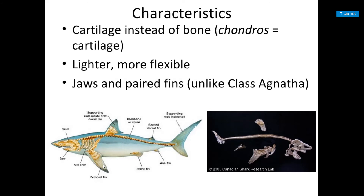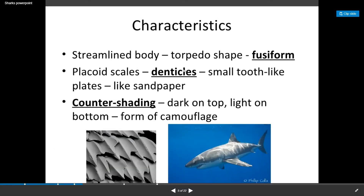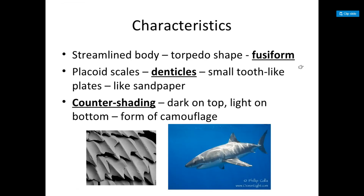Some characteristics: they have cartilage instead of bone — that's where Chondrichthyes comes from, 'chondri' meaning cartilage. They're lighter and more flexible. They have jaws and paired fins, unlike class Agnatha. They have a streamlined, torpedo-shaped body, also known as fusiform. They have placoid scales called denticles — small tooth-like plates, kind of like sandpaper.